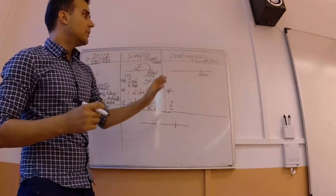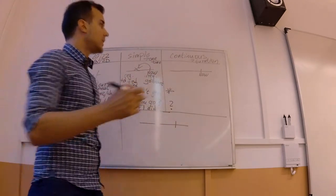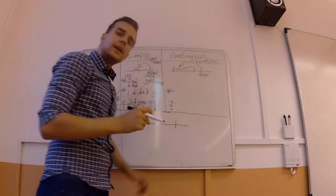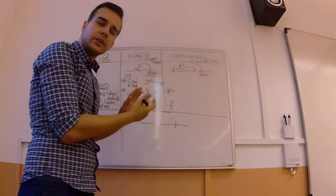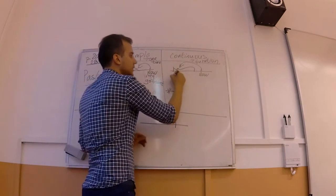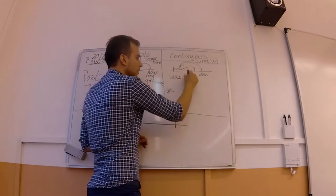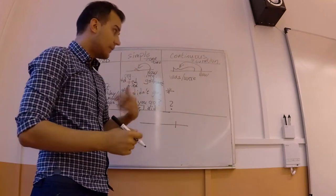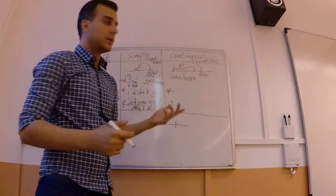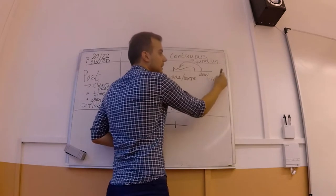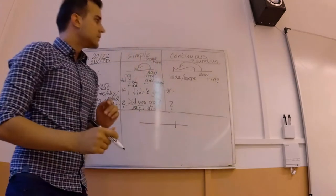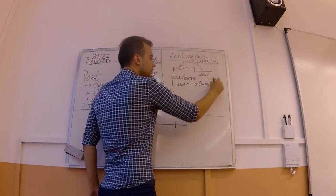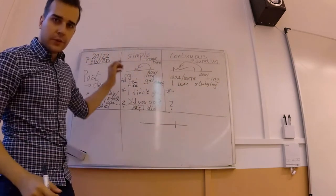Let's look at the big difference with the past continuous. If you look at the timeline over here, it will show you that this was an action that took some time. For past continuous, we use the verb 'was' or 'were' depending on the subject — so 'I was' and 'you were.' Then we just add the -ing form. For example: 'I was studying.'